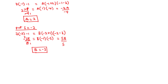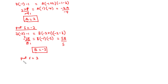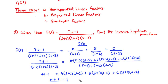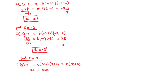To find the value of C, we put s equals 3 so that A and B all go to zero. On the left-hand side: 7 times 3 minus 1 equals 21 minus 1 equals 20. On the right-hand side: C times (3+1)(3+2) equals C times 4 times 5 equals 20C. Dividing both sides by 20, we get C equals 1.